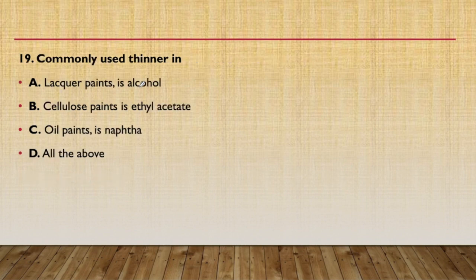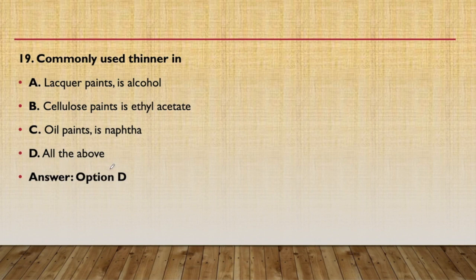The commonly used thinner in lacquer paint is alcohol, in cellulose paint it is ethyl acetate, and in oil paint it is naphtha. The correct answer is D — all of the above. Remember: lacquer paint thinner is alcohol, cellulose paint thinner is ethyl acetate, and oil paint thinner is naphtha.